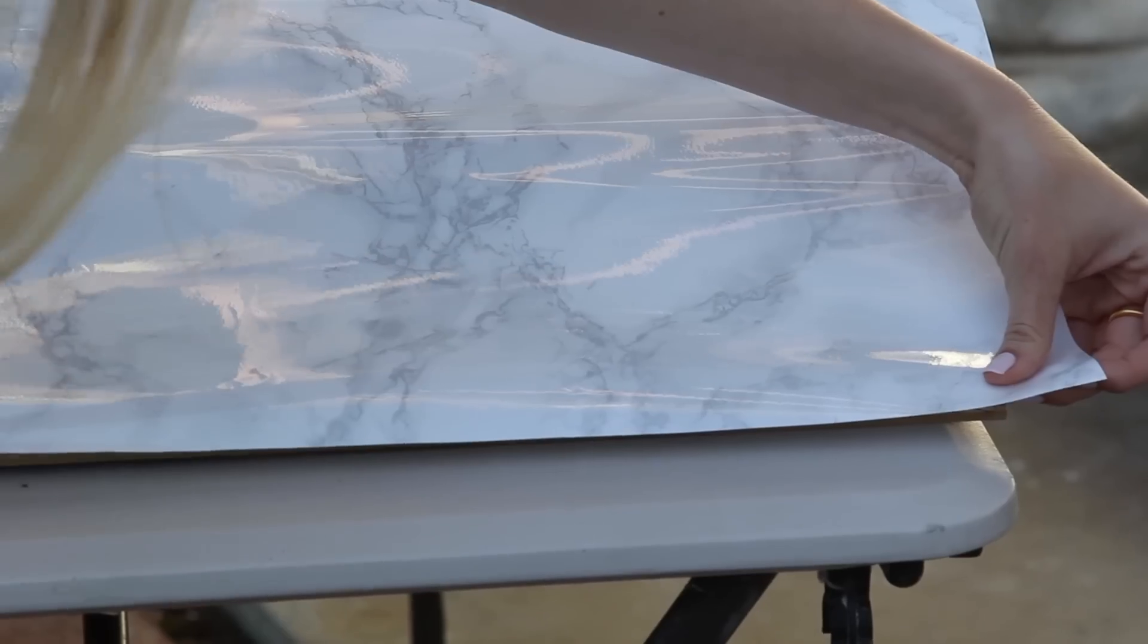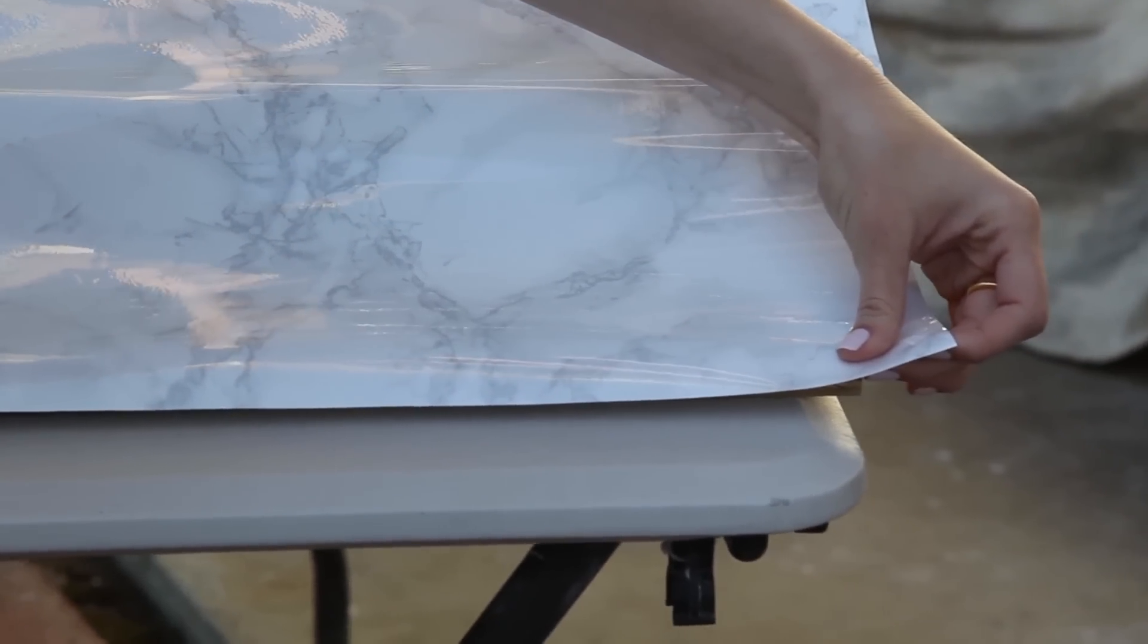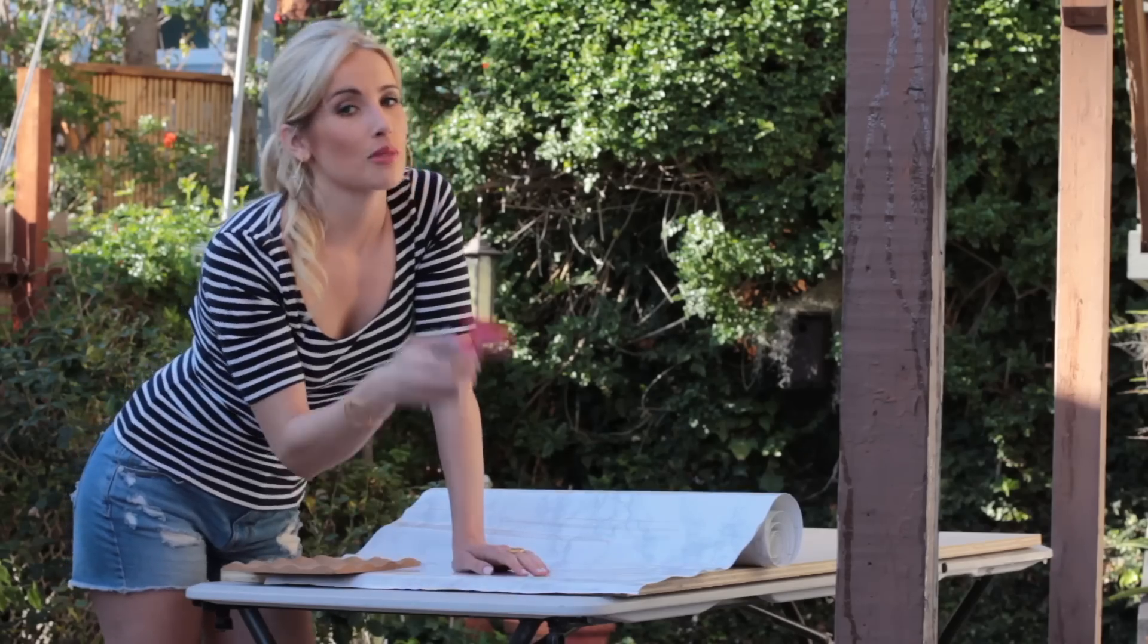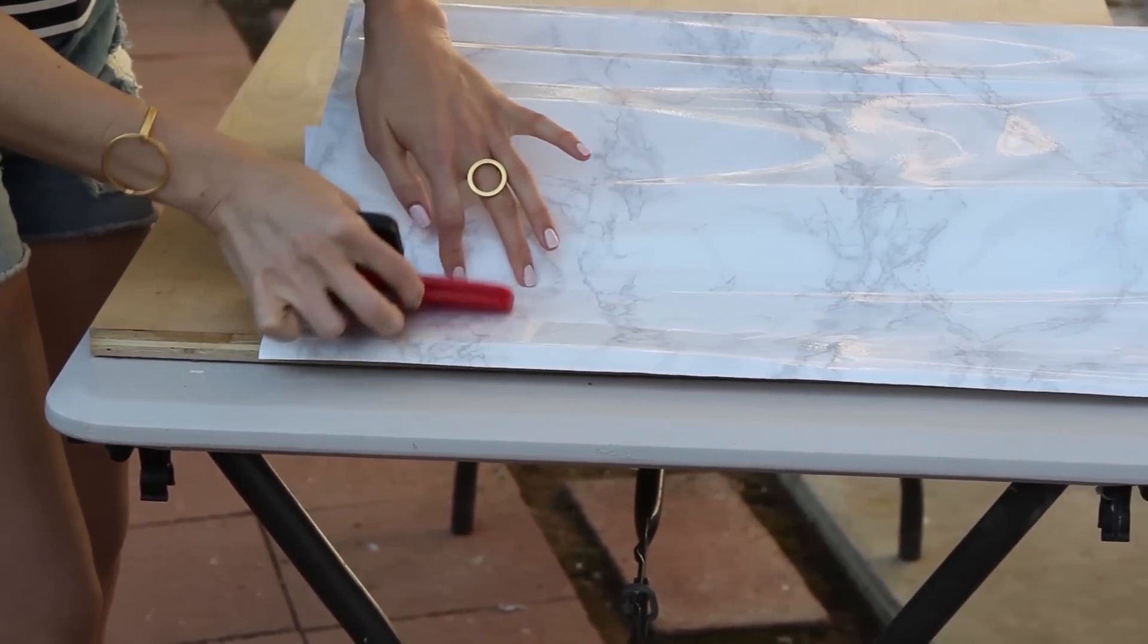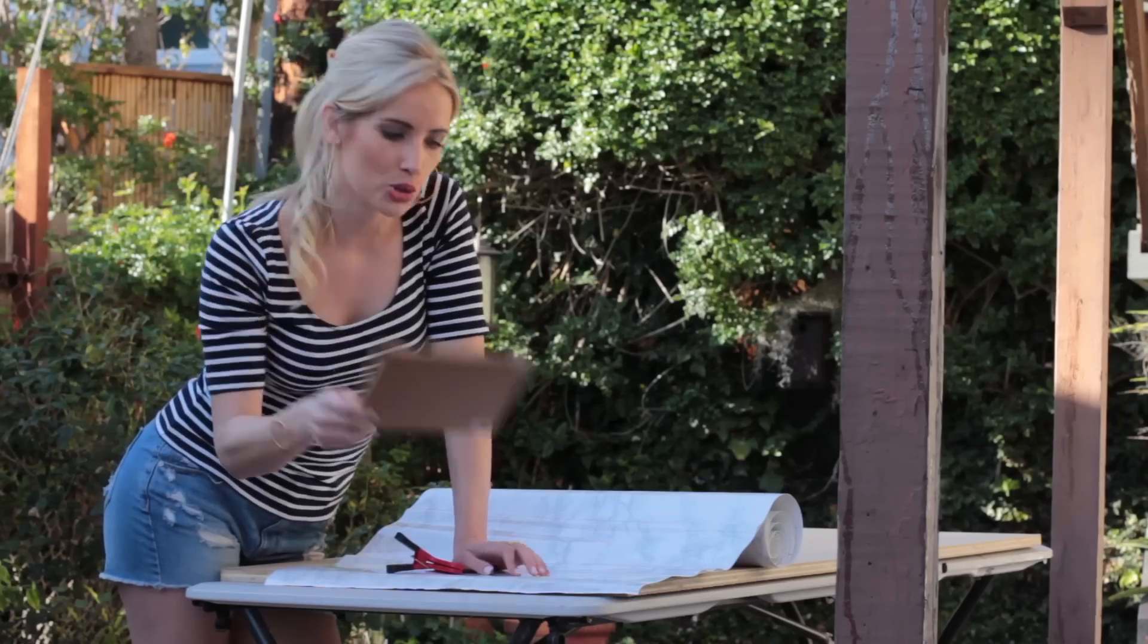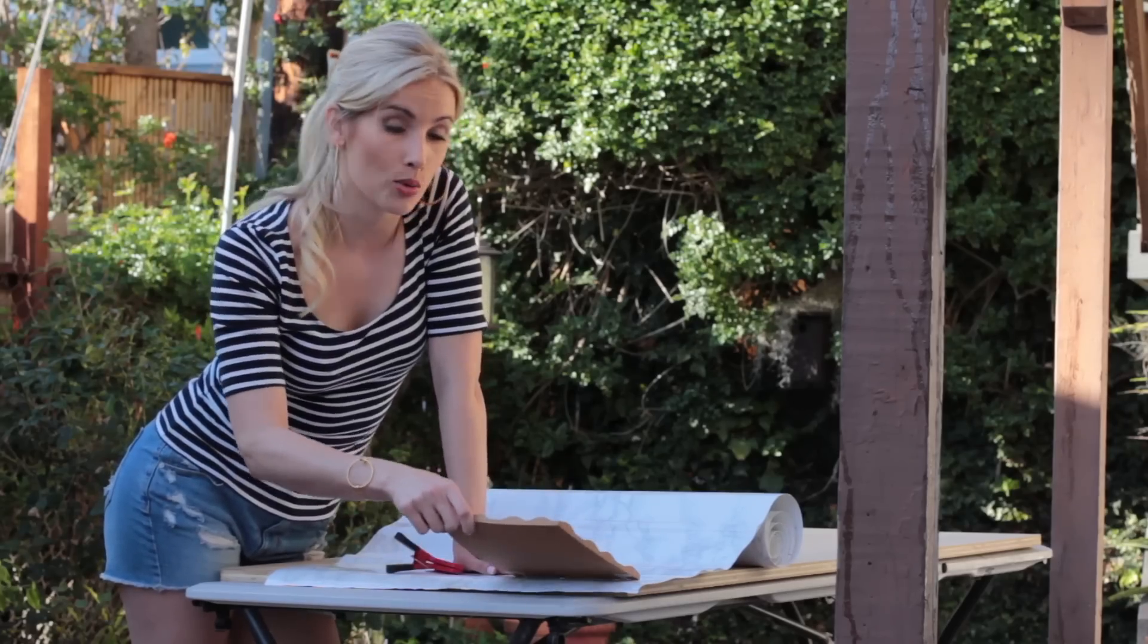If you don't have a plastic stucco knife or a squeegee, you don't have to buy one. Just use a chip clip or a corkboard, something that's not super rough and pointy but has a wide surface.